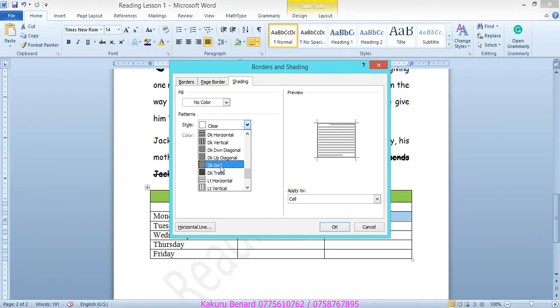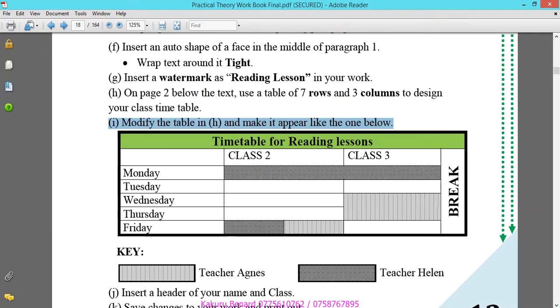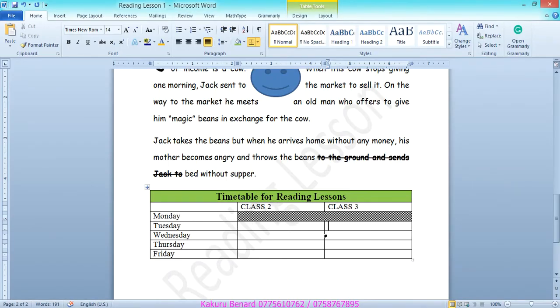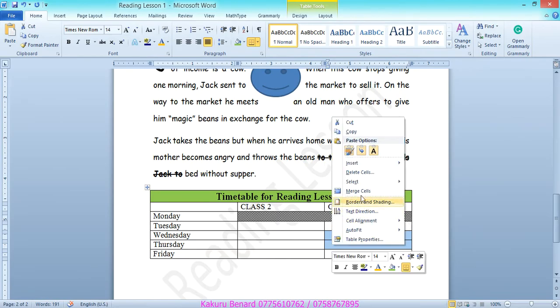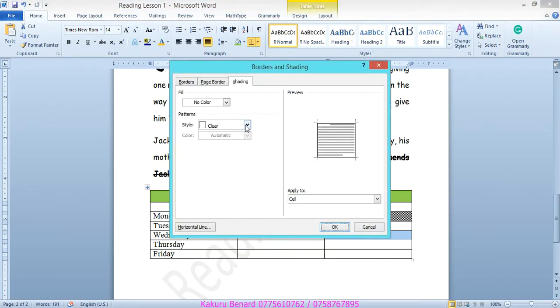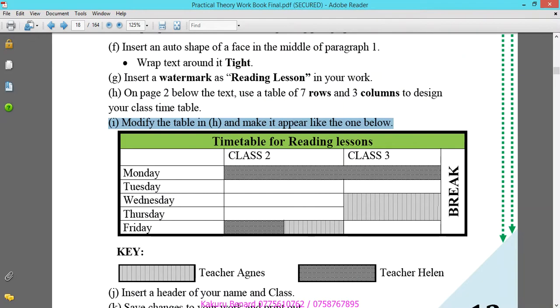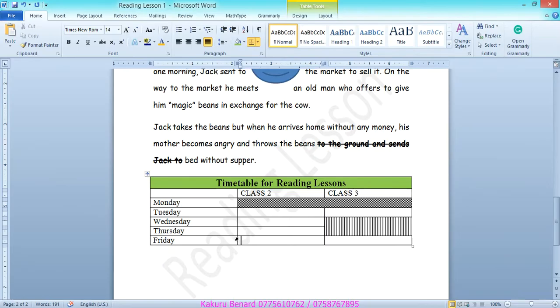Next there is this section. Highlight these two, right click merge cells. Right click again, borders and shading. Under patterns click down arrow, scroll down up to lot vatco, then click OK.